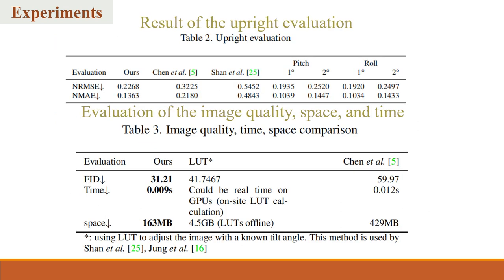To evaluate the results of the image adjustment, we employed normalized root mean squared error (NRMSE) and normalized mean absolute error (NMAE). We individually rotated the panoramic images by one and two degrees in both the pitch and the roll directions, and calculated the NRMSE and NMAE between the rotated images and the original images. Subsequently, we computed the NRMSE and NMAE between our method's generated images and the original images. The results indicate that our method achieves adjustment accuracy within the range of one and two degrees.